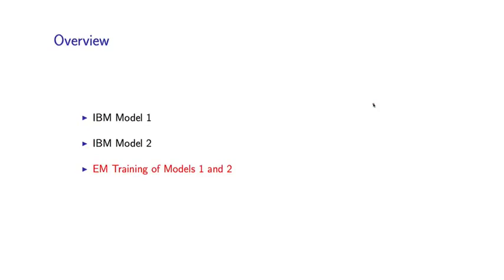In the final segment of this lecture, I want to talk about how we estimate the Q and T parameters in IBM Model 2. In particular, we're going to focus on something called the EM algorithm for estimation of parameters in these models.